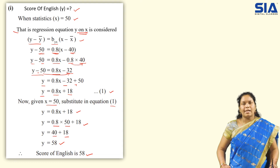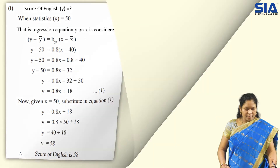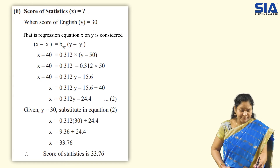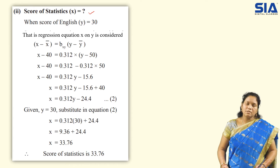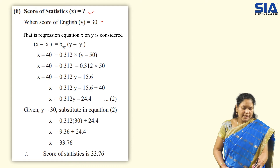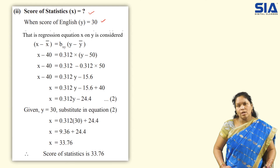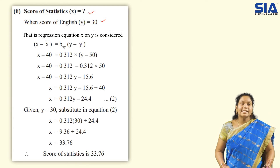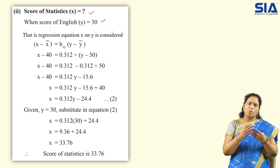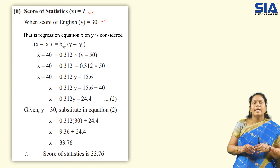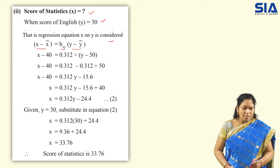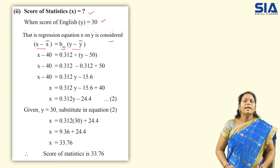Now let us go for the second question. They have asked to estimate the score of statistics, so x value is missing and English value y = 30 is given. Since x is missing, we go for the regression equation x on y. The formula is: x − x̄ = bxy × (y − ȳ). We have all values: x̄ = 40, bxy = 0.312, ȳ = 50.